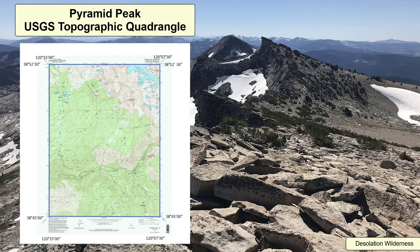USGS topographic quadrangles are maps produced by the US Geological Survey. They can be accessed in digital or paper form. For purposes of this video tutorial, I'll be using the digital version of the Pyramid Peak topographic quadrangle.